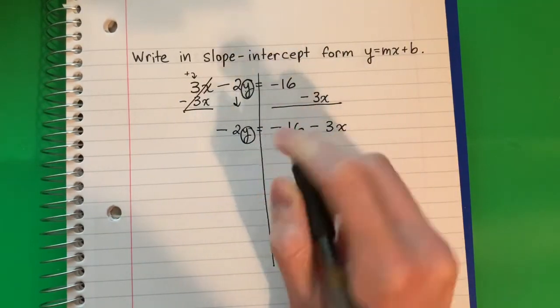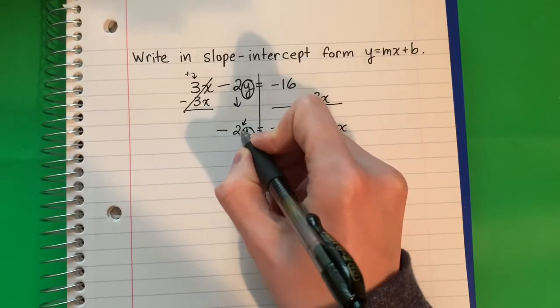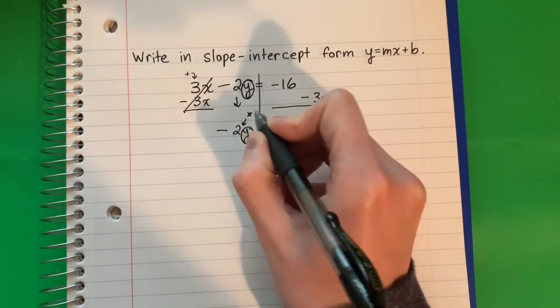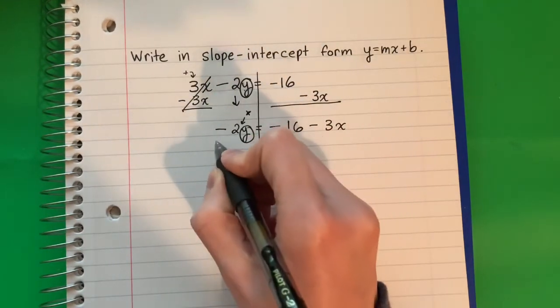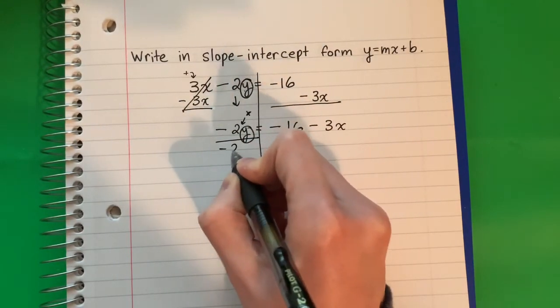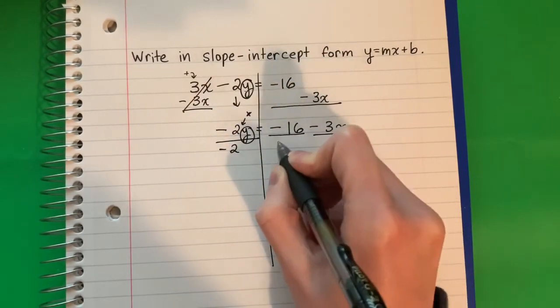I want the y alone. What is with y? It's negative 2. What is in the middle? It's multiply. Because there's nothing in the middle. No sign in the middle is multiply. The opposite of multiply is divide. Each one will be divided by negative 2.